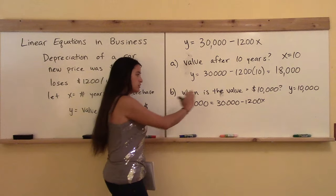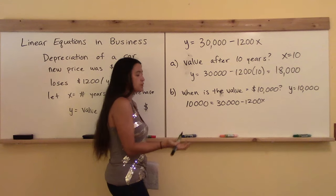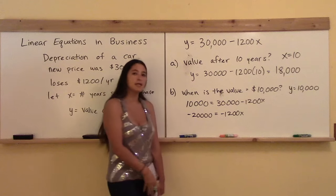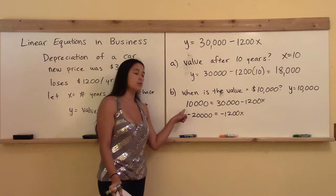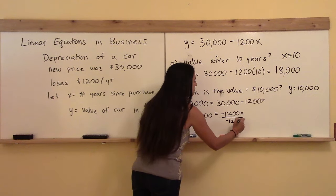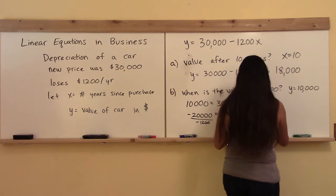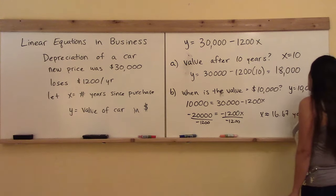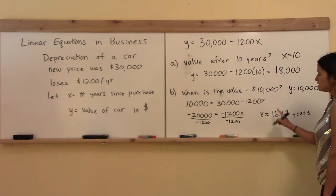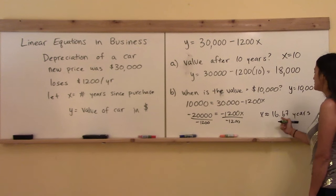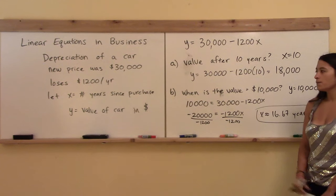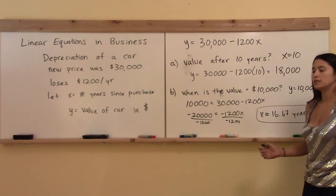I get an equation and put all the X's on one side and all the numbers on the other. Subtracting 30,000 from both sides gives negative 20,000 on one side and negative 1,200X on the other. Dividing by 1,200 on both sides gives X approximately equal to 16.67 years. The exact answer is 16 and two-thirds years — a repeating decimal — so I rounded to two decimal places. That's approximately 16.67 years before the car is only worth $10,000.